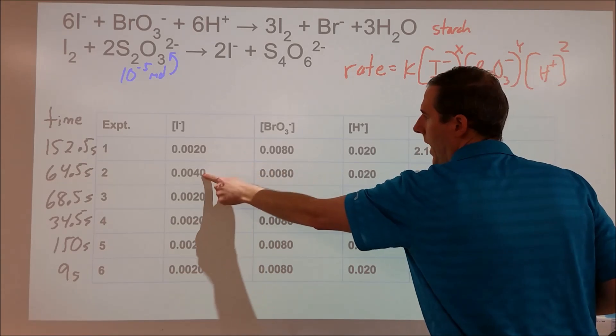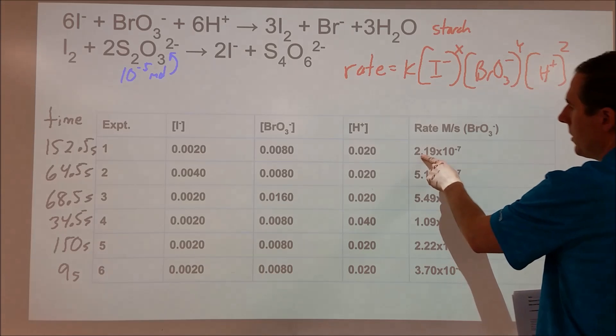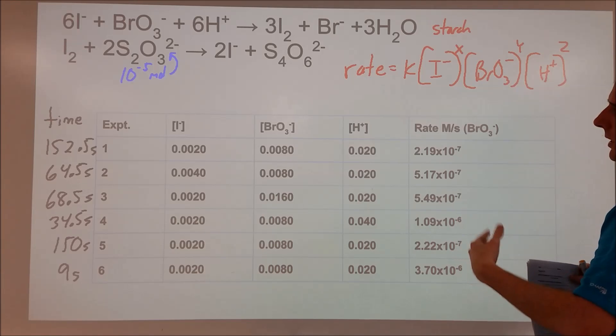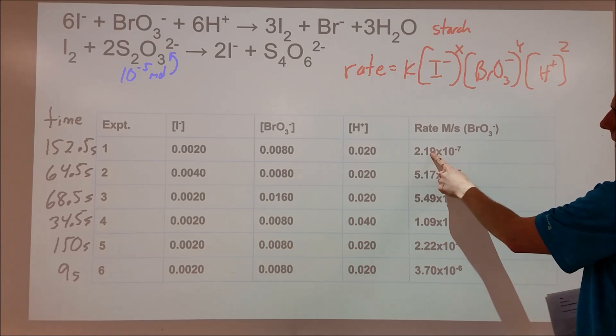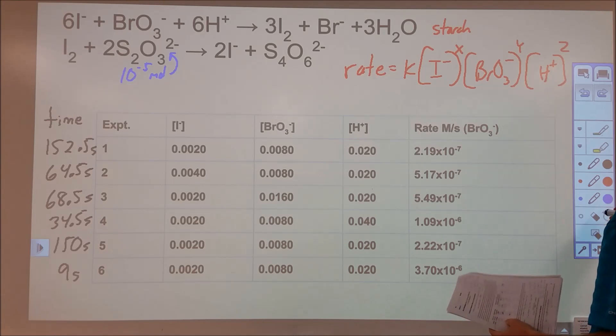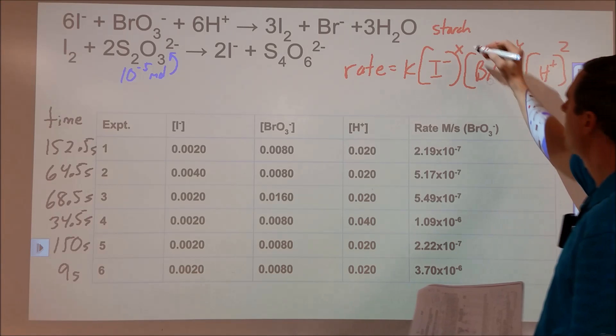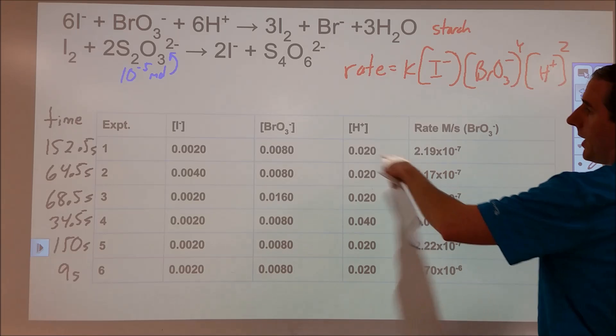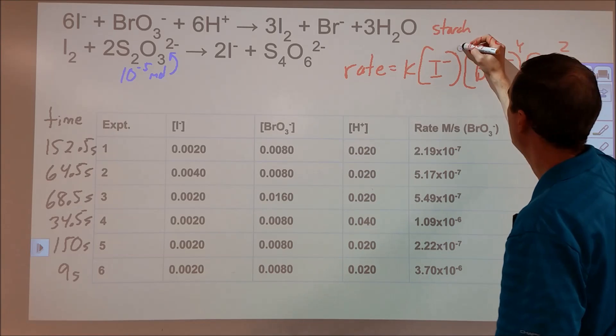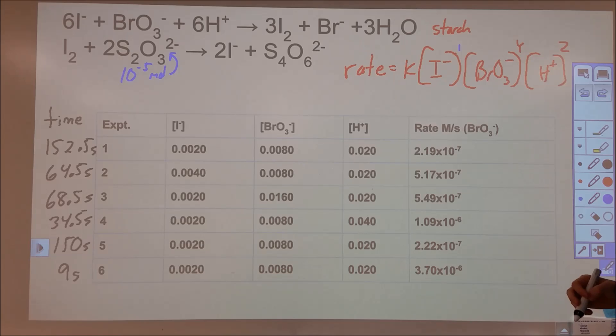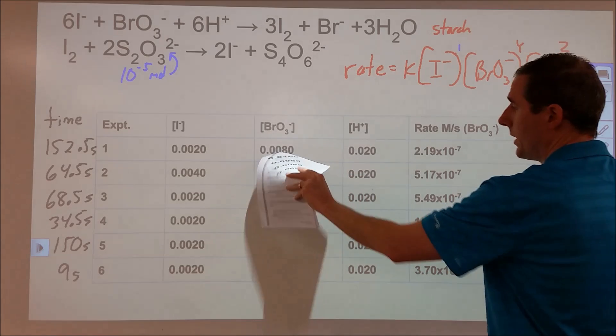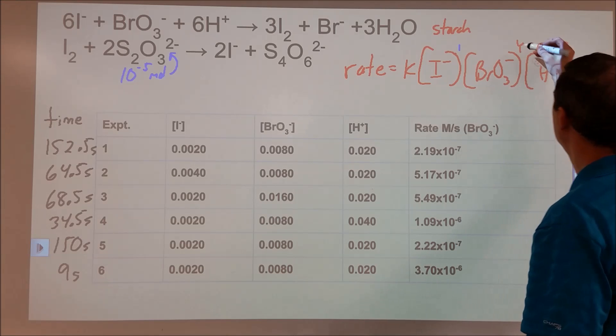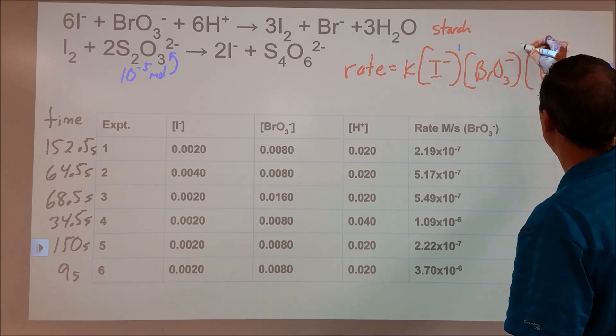And so, what we do then is, we go through and look. So iodide doubles, what happens to the rate? Well, it goes from 2.2, so about 2.5, to about 5. So we're looking at a case where it's about double. Now it's not perfect, it's a little more than double, and it turns out to be about 2.5. But we're going to assume that that's close enough where we can say, that is doubling as that doubles. So we're going to give that a first order. For the bromate, we look again, and we see that this doubles, and this about doubles again. So we're going to give that a first order.